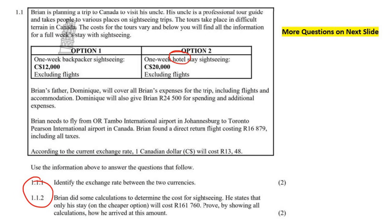Brian's father Dominique will cover all of Brian's expenses for the trip, including flights and accommodation. Dominique will also give Brian 24,500 Rand for spending and additional expenses. Brian needs to fly from OR Tambo in Johannesburg to Toronto Pearson International Airport in Canada. Brian found a direct flight costing 16,000 Rand including all taxes. We also have the exchange rate provided.